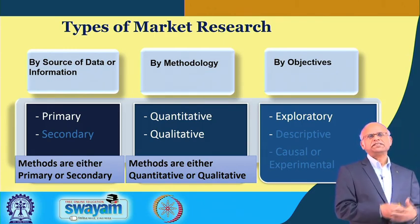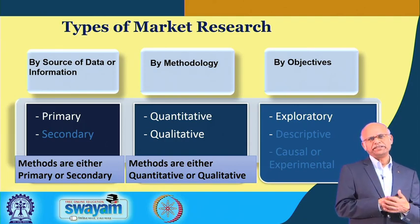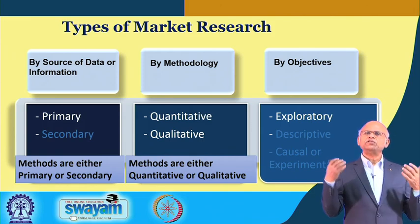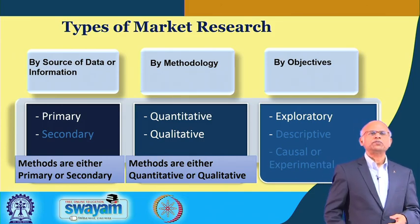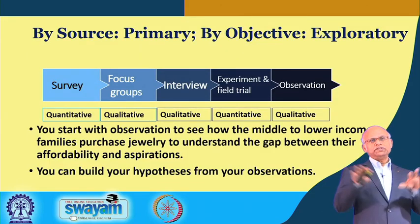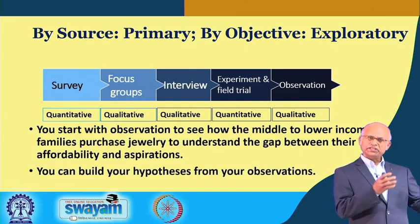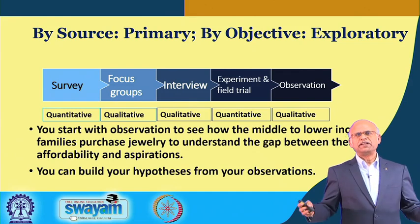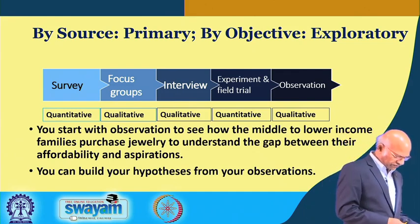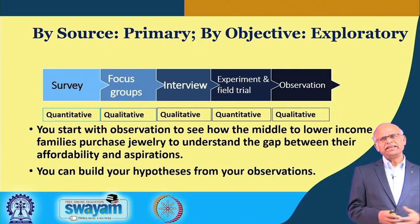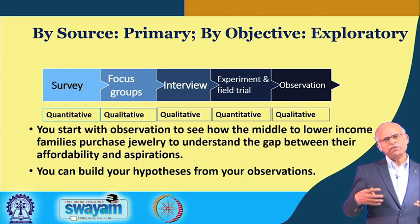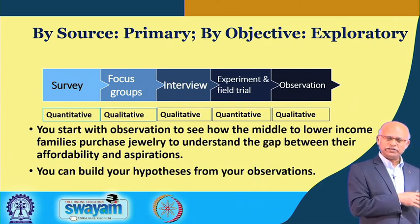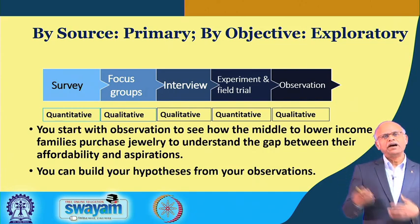We will first discuss the primary method of market research, which will have both qualitative and quantitative data, and then it will be exploratory first. The primary types of research are: survey, focus group interview, experimental filter, and observation. You start with observation — whether this really makes sense and will make people happy, whether they can really afford it or they are already buying high-value jewelry.